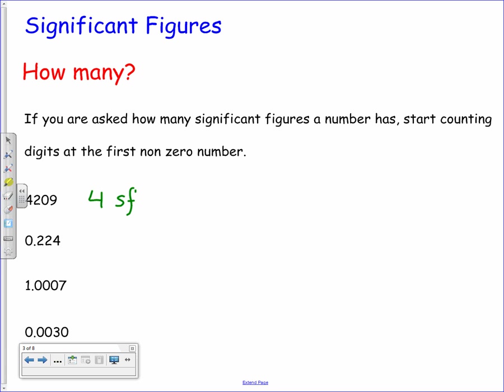For the second one, 0.224, the first digit is a zero so we're going to leave that out and start counting from the two. Counting the three digits gives us three significant figures.